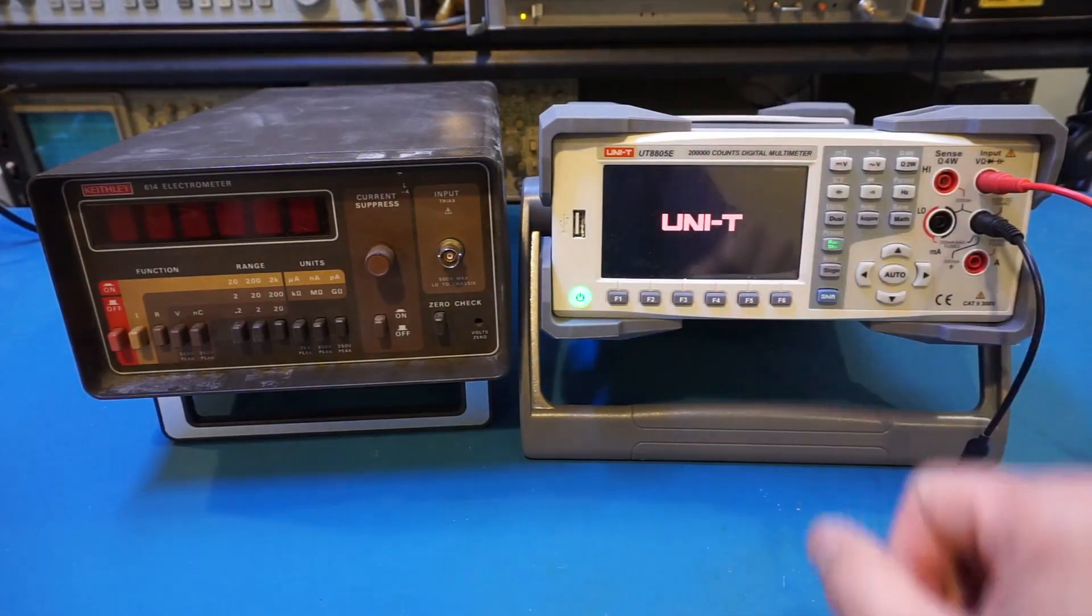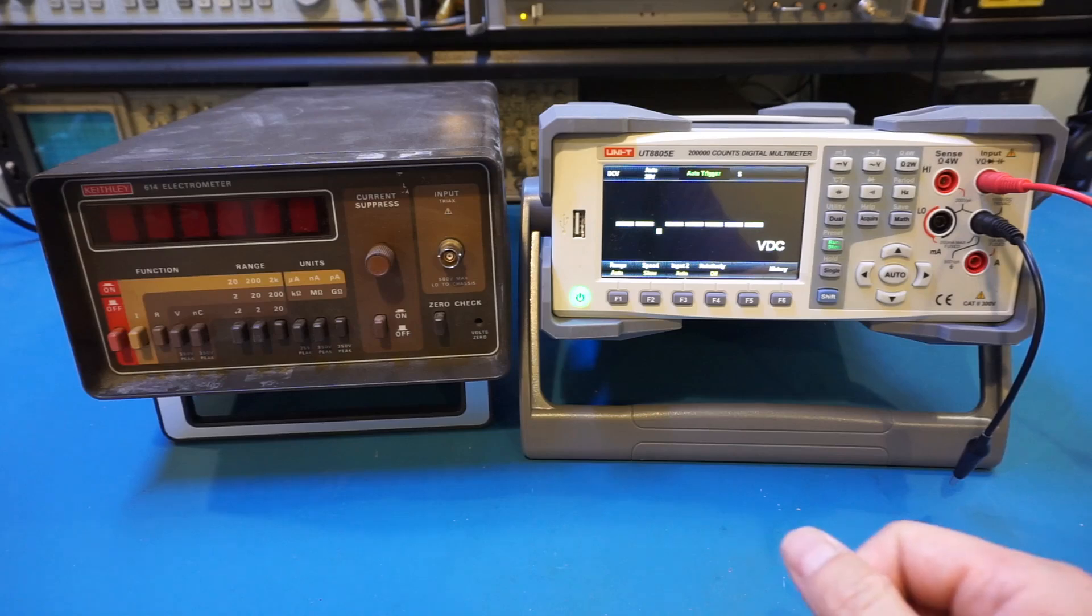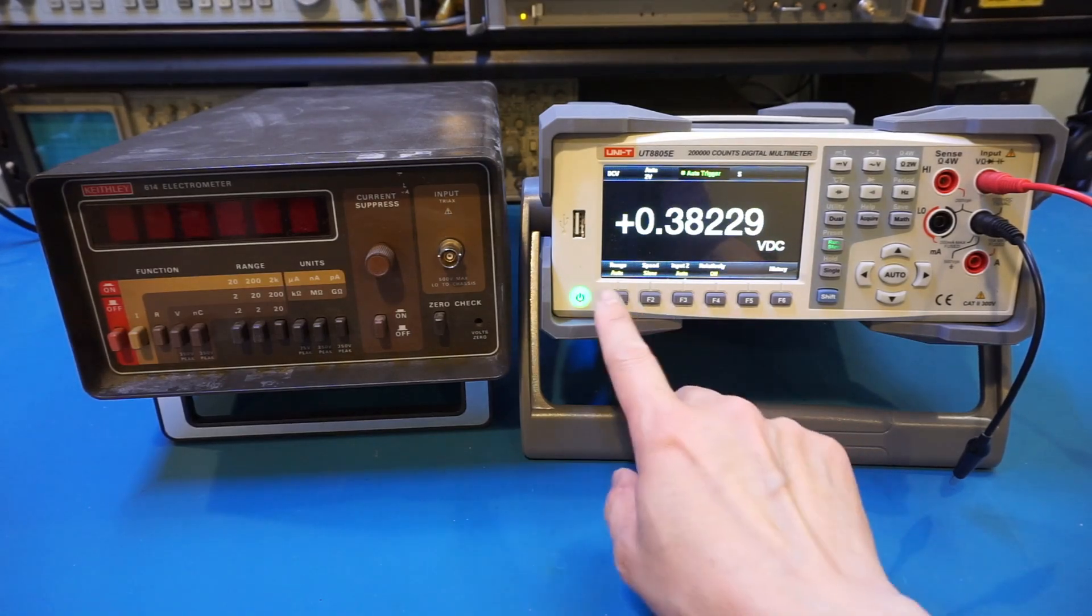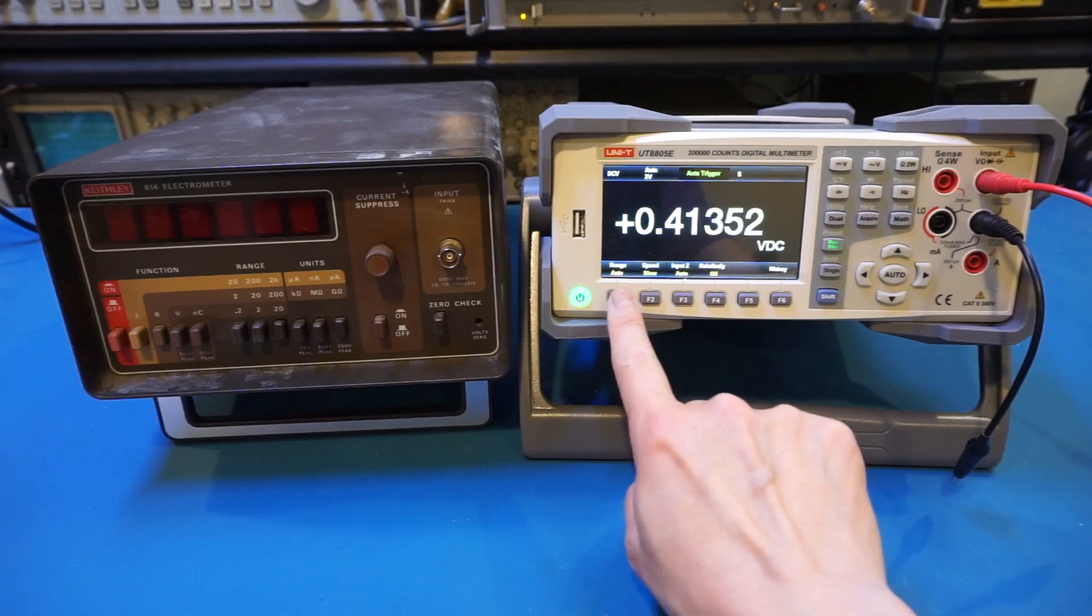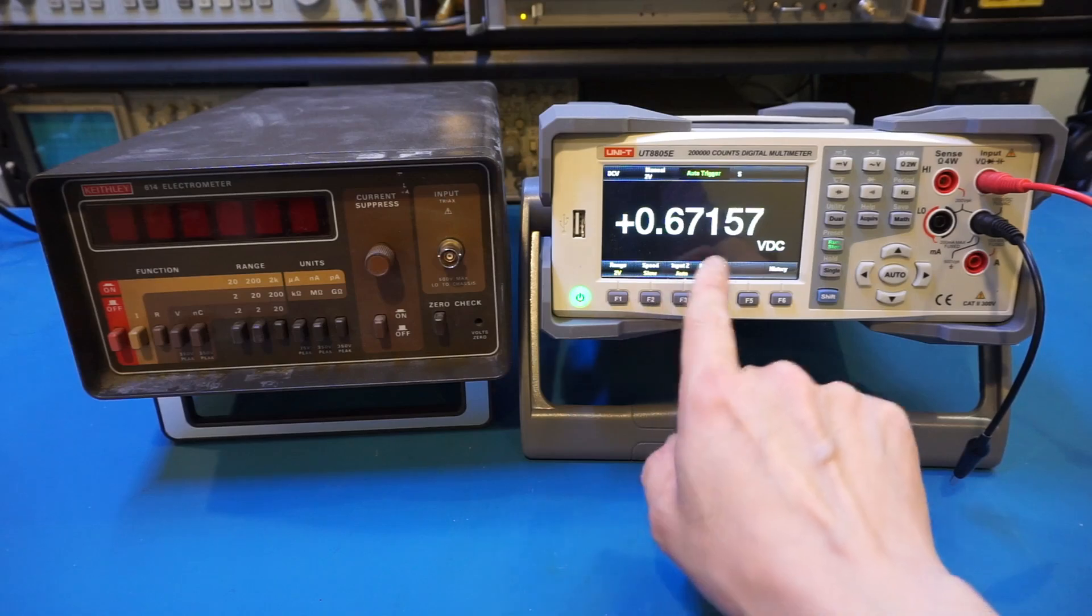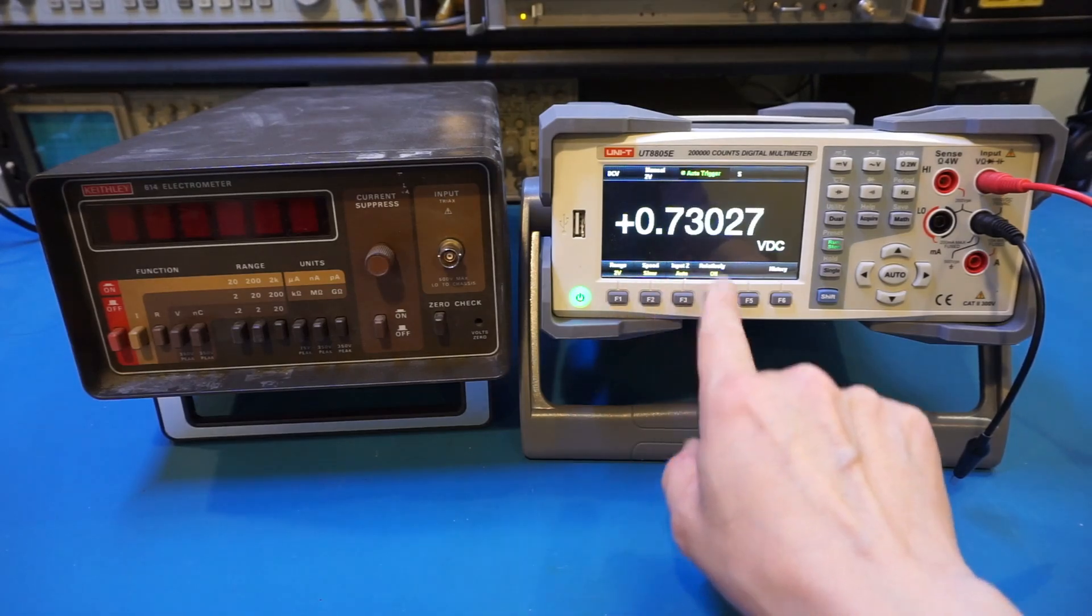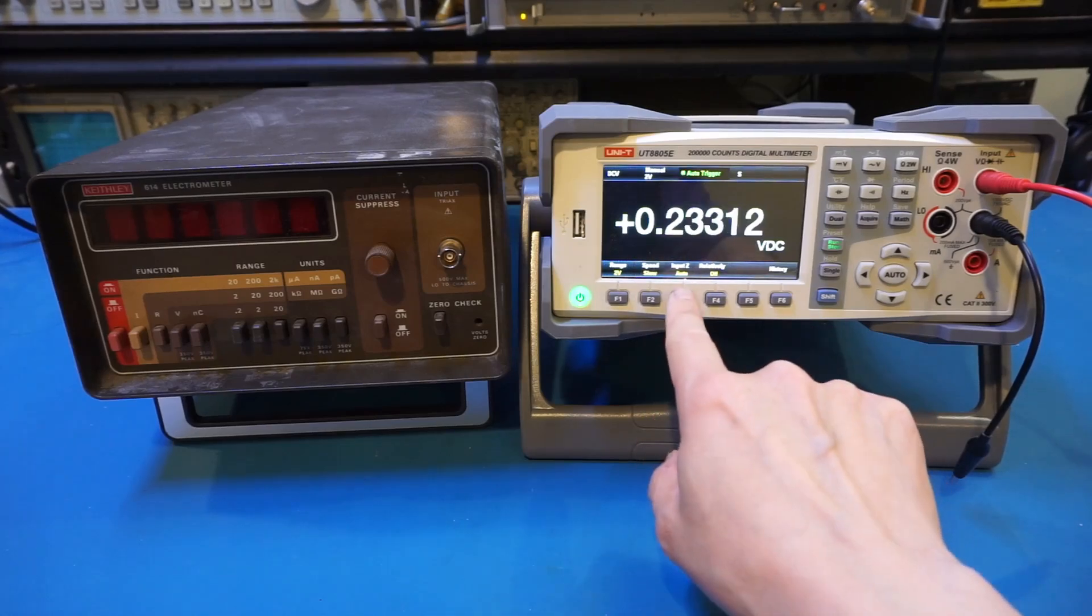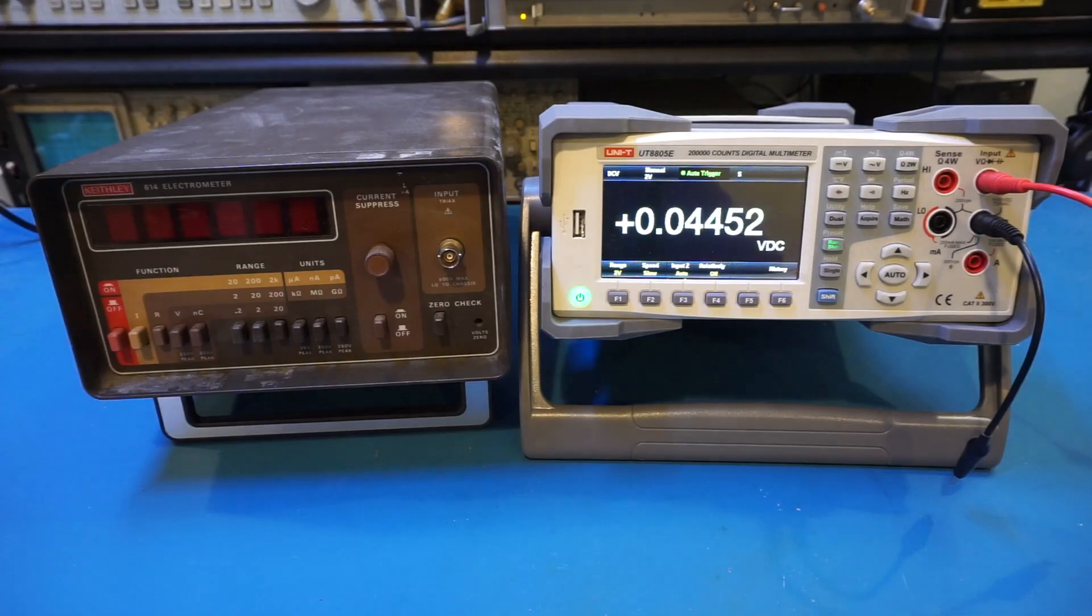When we first power it up, it will be in this automatic mode. So let's change the measurement to, let's say, range to two volts. And speed, I'll leave it as slow. And the input impedance, let's leave it as auto, as this is a 10 gigaohm. And the other range is a 10 megaohm. So let's leave it as 10 gigaohm.